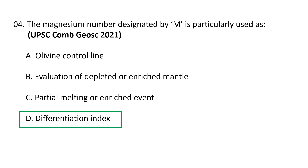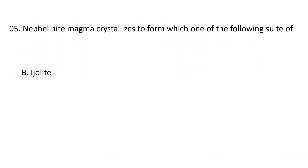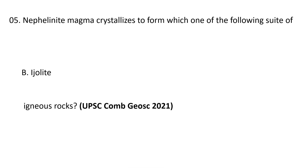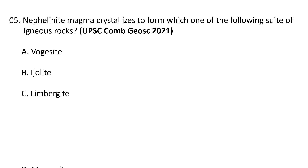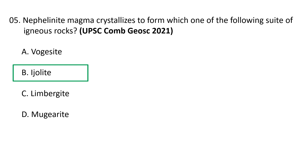Question 5: Nepheline magma crystallizes to form which of the following suite of igneous rocks? Choices: (a) agecite, (b) ijolite, (c) limbergite, (d) mugearite. The correct option is B — ijolite. Ijolite is an intrusive igneous rock composed essentially of nepheline and an alkali pyroxene, usually aegirine-augite. It is the plutonic equivalent of volcanic nephelinites, and typically the pyroxene is well crystallized and surrounded by nepheline.